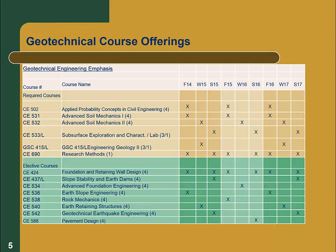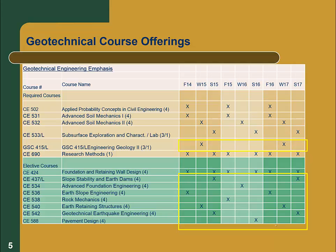Course scheduling is really important when setting up your program. The required courses shown in the brown background and elective courses in the green background are laid out here. Courses in the red boxes are offered every year — some like the research methods class and the foundation engineering class are offered more than once a year. Courses in the yellow boxes — most technical electives plus the engineering geology class — are only offered every other year. So required classes are generally offered every year and technical electives every other year.